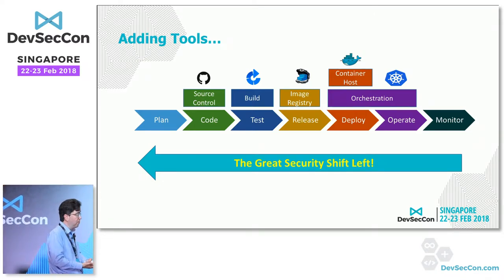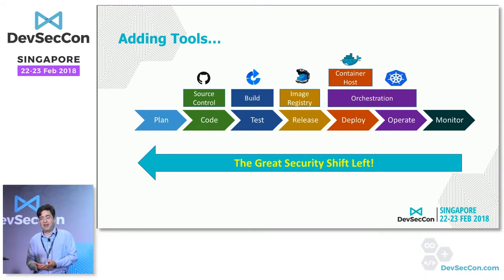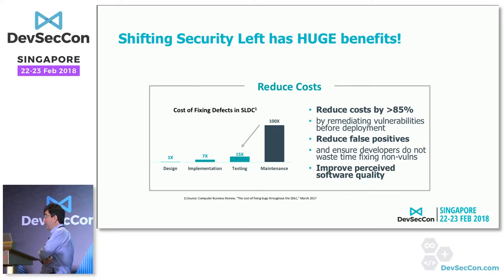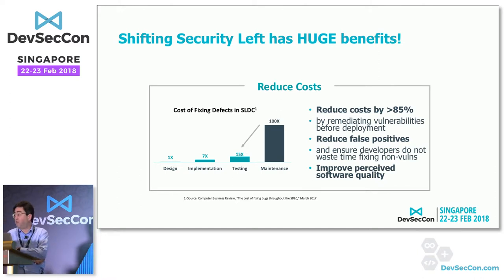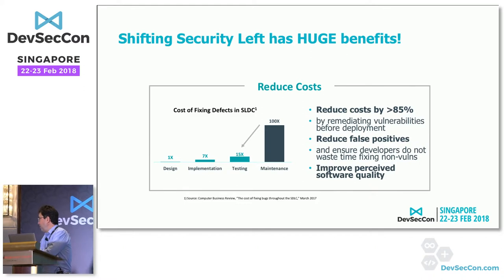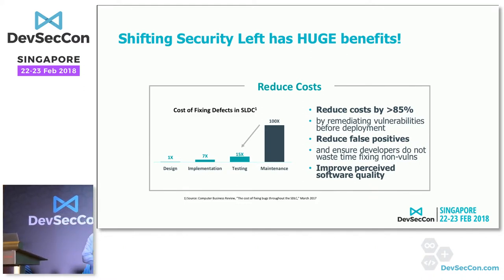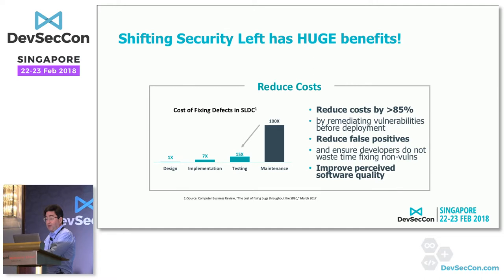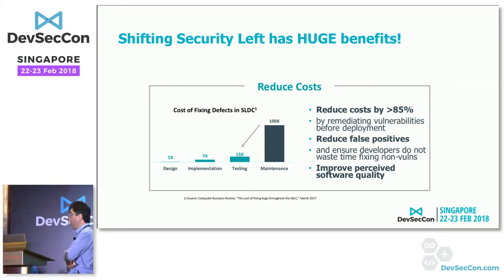Shifting security left provides many opportunities using different types of tools, resulting in higher quality and more secure products at deployment, and the ability to detect things early. There is a very significant cost benefit — costs are reduced by at least 85% when vulnerabilities are detected before deployment, partly because exploited vulnerabilities are extremely costly. Catching things earlier also reduces false positives and has a perceived improvement in overall software quality.